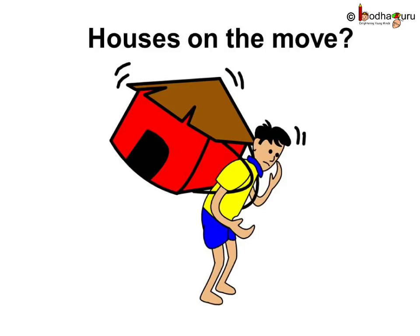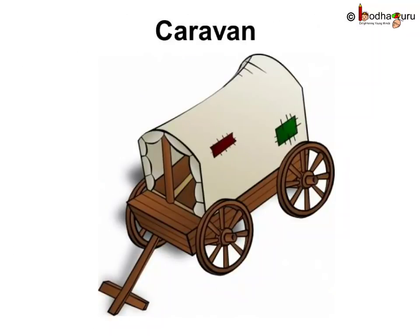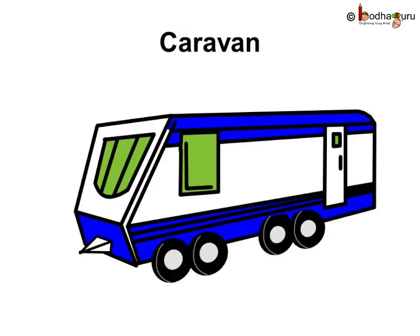Some people keep moving from one place to another, either due to scarcity of food and water, or due to extreme climate, or due to work. If they live in permanent houses, it won't be possible to carry their houses along with them. So they make temporary houses that can be moved from one place to another. In villages, generally people use a bullock cart to make their temporary house, while others use a bus or van and turn it into their moving house. These are called caravans.